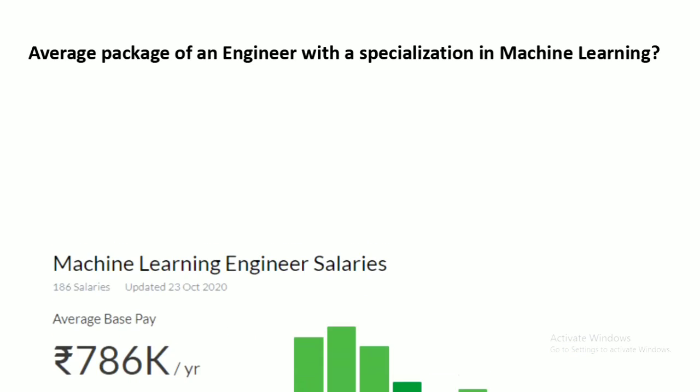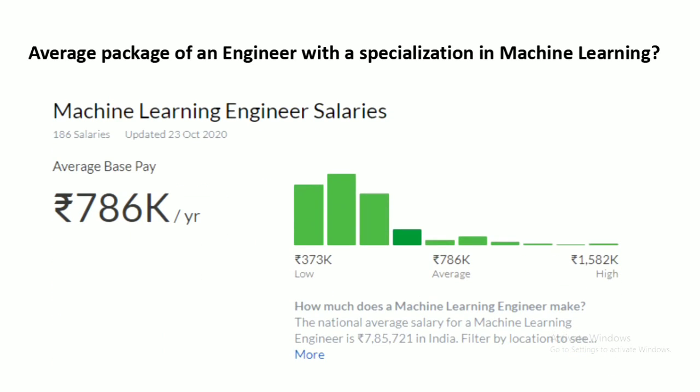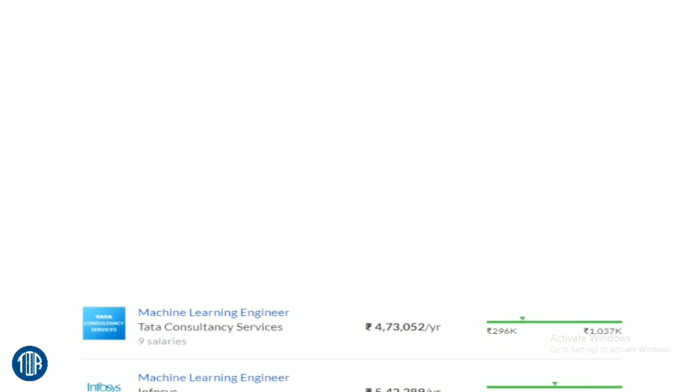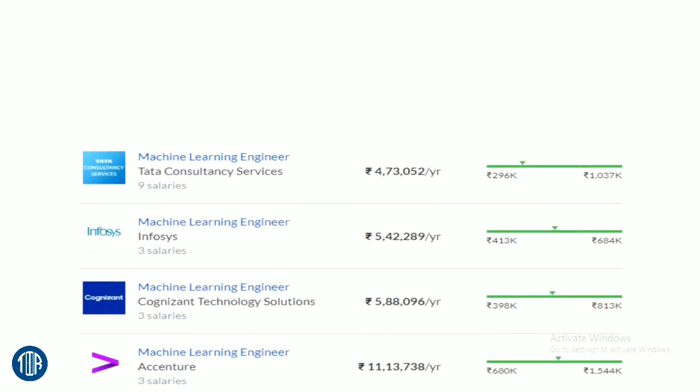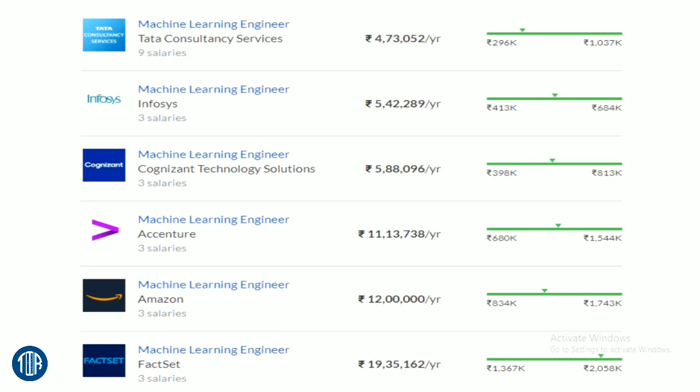What will be the average package of an engineer with a specialization in machine learning? Let's see it practically. This is the survey conducted by Glassdoor. Yes, this is the average salary of an ML engineer — it's around 8 lakh per annum, which means around 65k rupees per month. These are the top renowned companies and their salaries for ML engineers. If you want to note them down, kindly pause this video and take a screenshot, or it is available in the description box. You can check it out there.